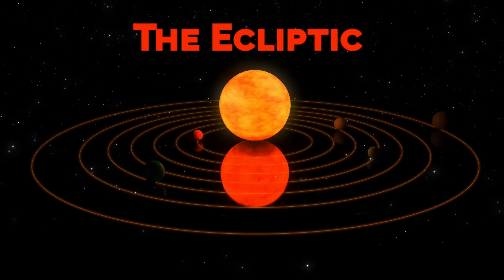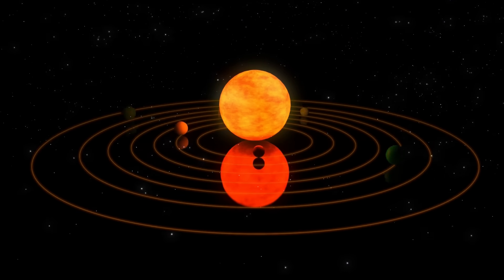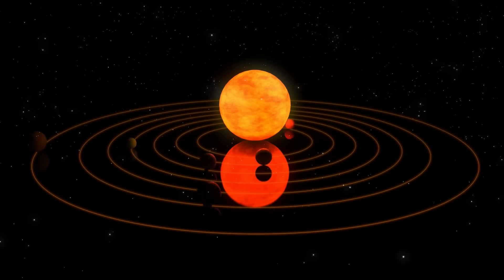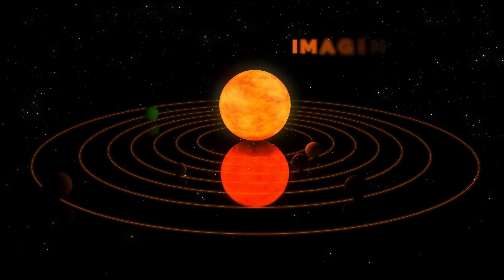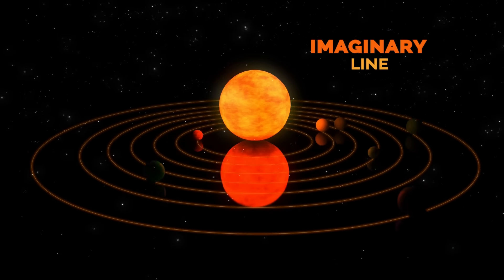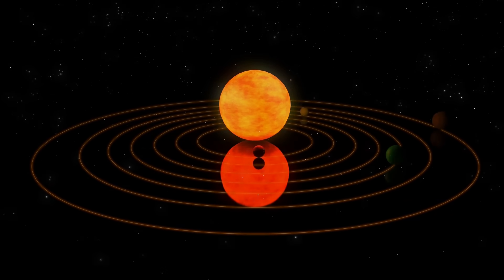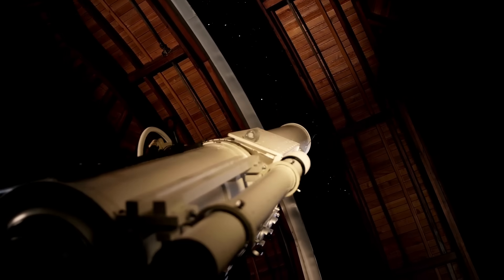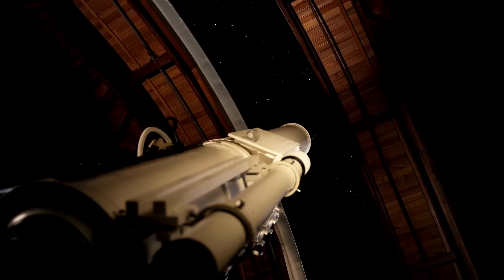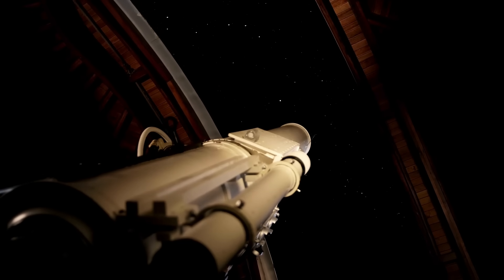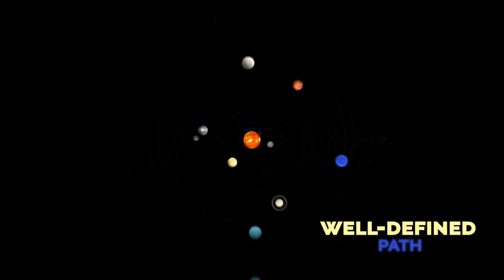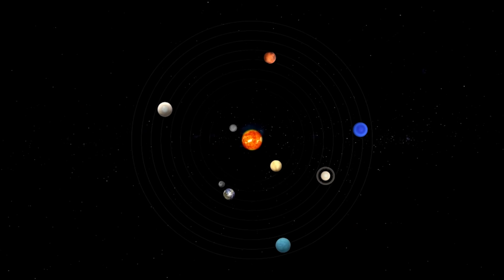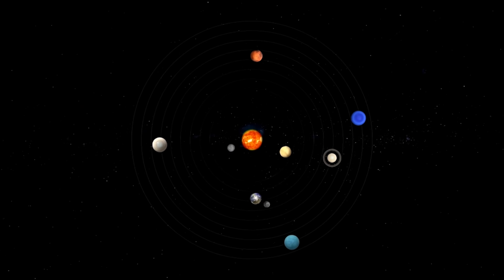When we see the planets from Earth, they're always within an ecliptic zone — an imaginary line that the sun and the planets follow in the sky. When the first astronomers in history began to observe the movements of the planets, they realized that they always followed a well-defined path through the ecliptic, and that no known planet was outside this region.